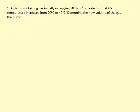A piston containing gas initially occupying 50 cm³ is heated so that its temperature increases from 20°C to 40°C. Determine the new volume of the gas in the piston. We're going to assume that the pressure is constant and the number of particles is also constant. We need to initially convert to Kelvin, to the absolute temperature scale, so that becomes 293 Kelvin and this becomes 313 Kelvin.